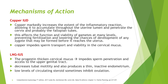Copper also impedes sperm transport and viability in the cervical mucus. For the LNG-IUS or Mirena, the progestin levonorgestrel thickens the cervical mucus, which impedes sperm penetration and access to the upper genital tract. It also decreases tubal motility due to the anti-peristaltic action of progestins, and produces a thin, inactive endometrium. Low levels of circulating steroid hormones can also inhibit ovulation.